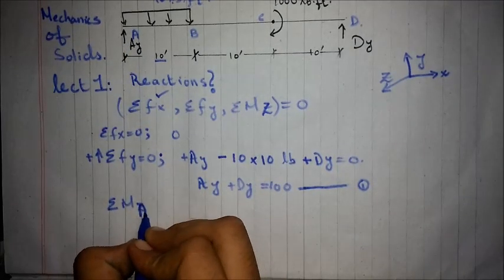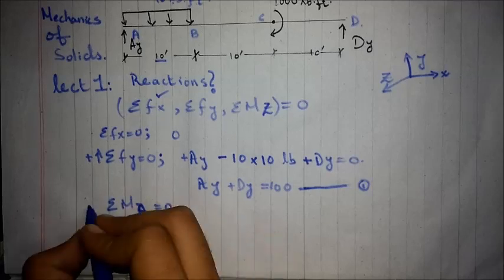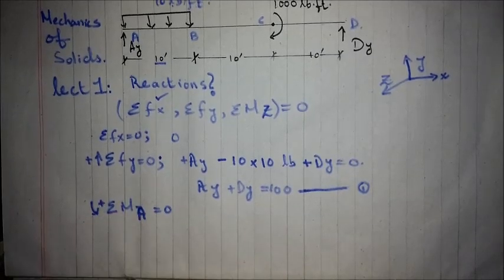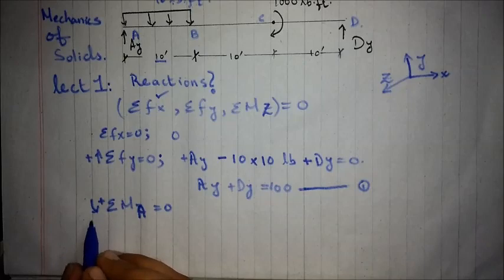So we apply the equation for point A, assuming anti-clockwise direction positive. Now, I will tell you the meaning of anti-clockwise direction.